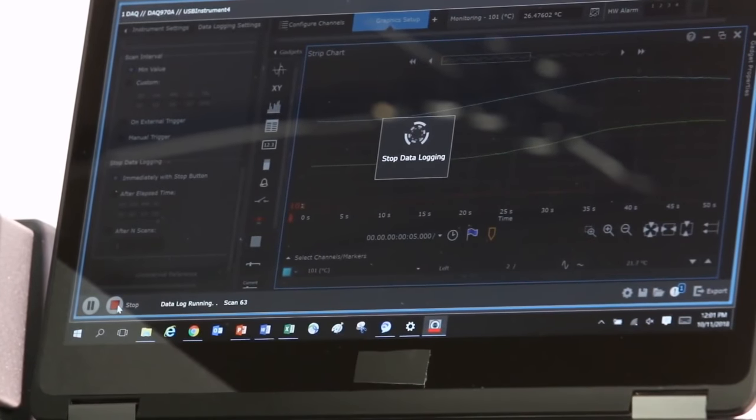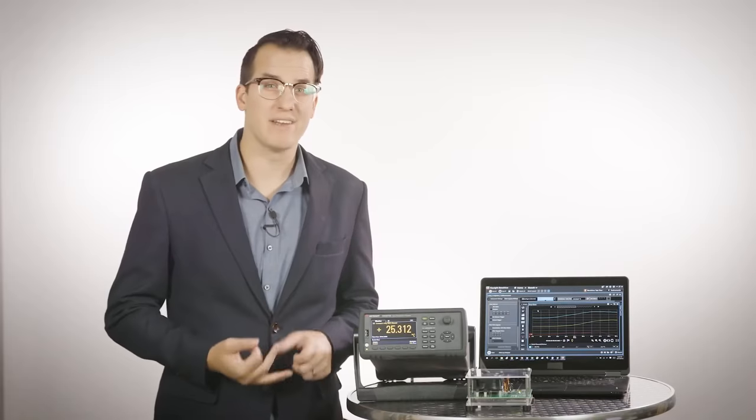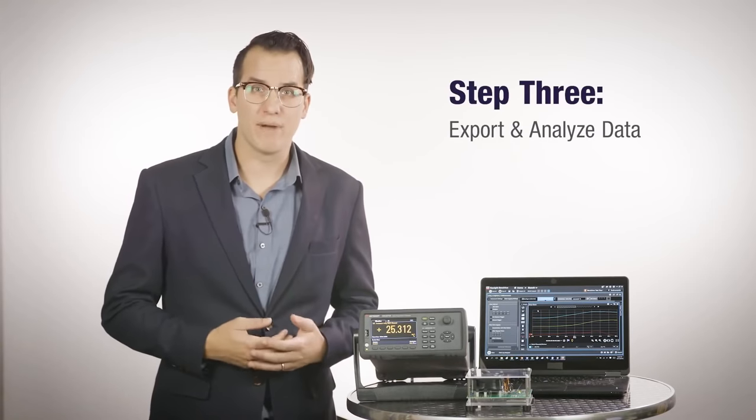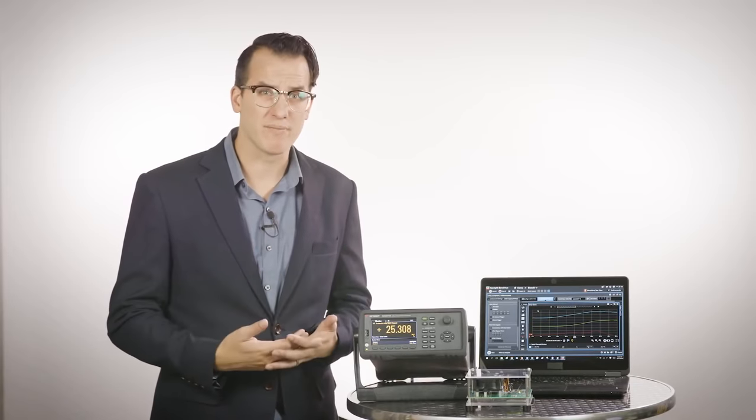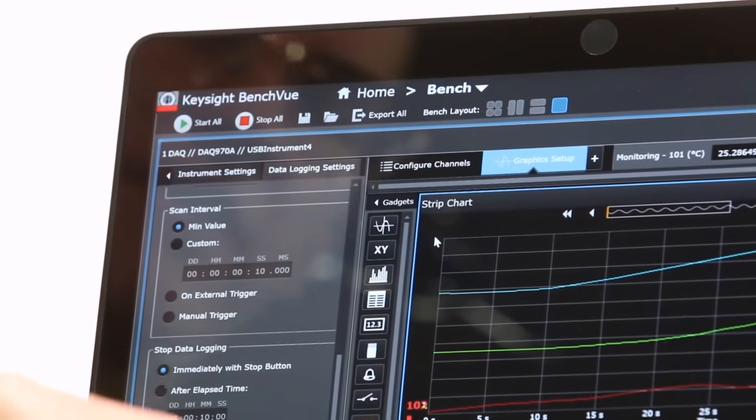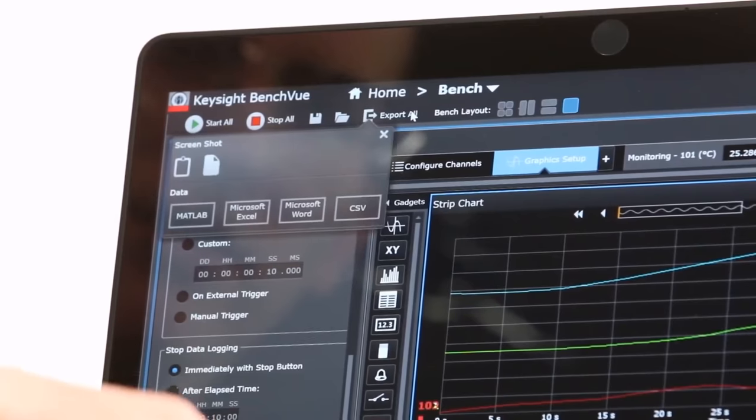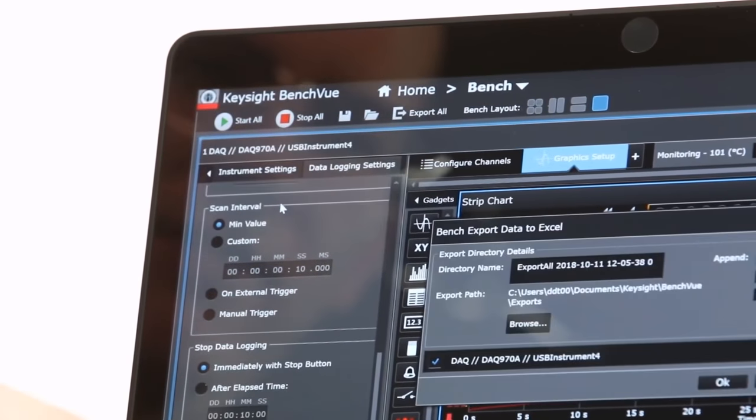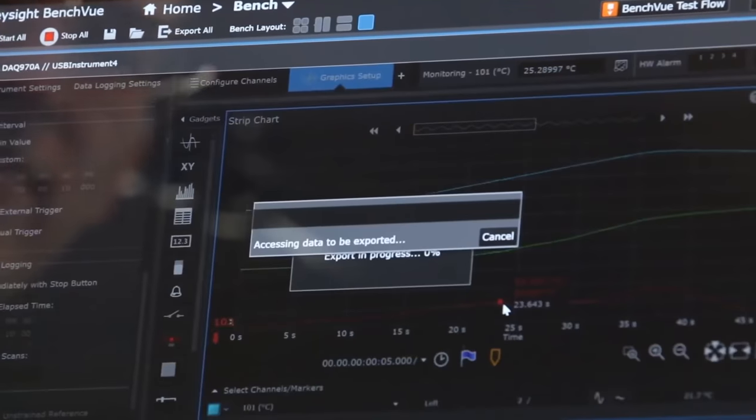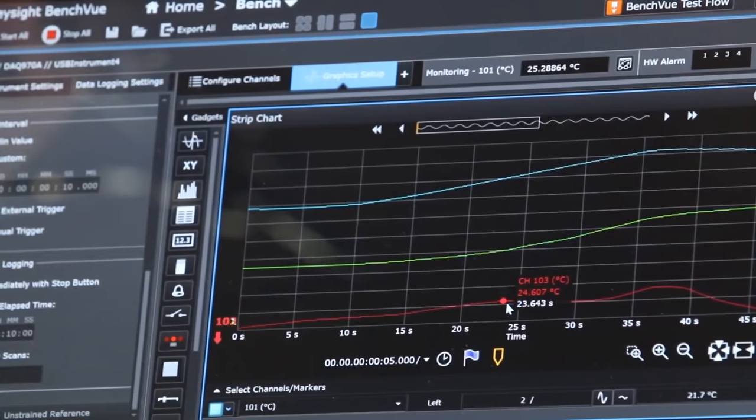Once we've run our tests, we can move to step three, exporting and analyzing data. I'd like to get it in Excel format, but you can also see that BenchVue is providing some basic analysis for me. So I want to do some post-process analysis in Excel, so I'm going to hit export all and you can see it gives me a couple file options. We're going to choose Excel and export here, and it's going to automatically save that to an Excel file and open that up in the Explorer.